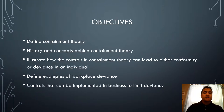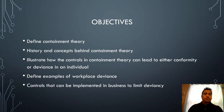Our objectives today are to define containment theory, talk about its history and concepts, illustrate how the controls in containment theory can lead to either conformity or deviance in an individual, define examples of workplace deviance, and talk about the controls that can be implemented to limit deviancy in business.